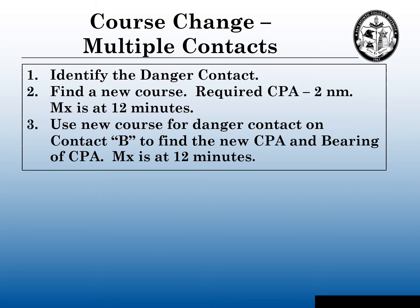Let's learn how to change course on multiple contacts. The first thing we have to do is some type of situational assessment to identify the danger contact — the one we have to maneuver against first. Second, we're going to find that new course. Our own ship is going to have a required CPA of two nautical miles, and our execution point, our MX, is going to be at 12 minutes. Once we find that new course for the danger contact, we're going to apply that same course to contact Bravo to find the new CPA and bearing CPA. MX will remain at 12 minutes.